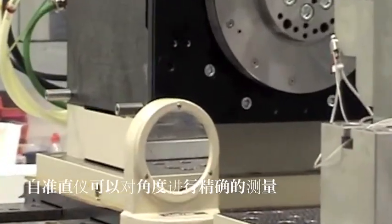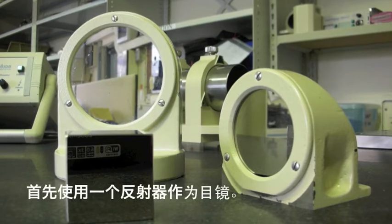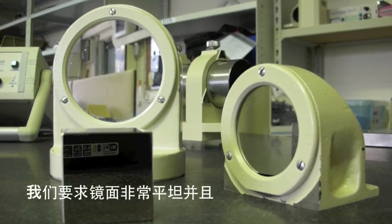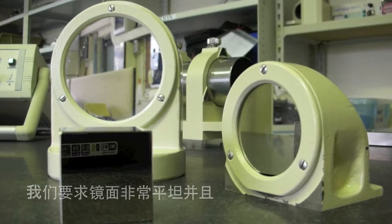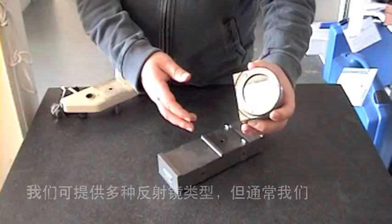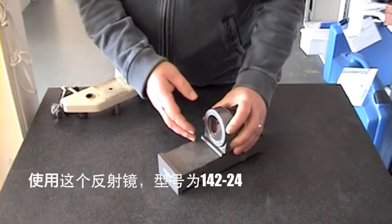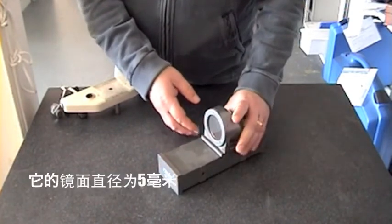An autocollimator measures angle very accurately and we use a reflector as the target. Mirrors need to be flat and have a very good surface finish. There are various mirrors but normally we use this one, the 14224, which is a 50mm diameter mirror.